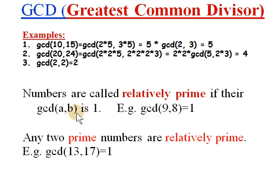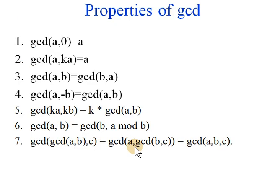Numbers are called relatively prime if their GCD is 1. For example, 9 and 8, the GCD is 1. Any two prime numbers are always relatively prime because they have nothing in common. For example, 13 and 17 are prime and you get 1. What are the properties of GCD? GCD of A and 0 is A. GCD of A and K times A, you can just pull out the A. It's symmetric: GCD of AB same as BA. The sign doesn't matter: A and minus B same as A and B. If both have a common factor K you can pull it out. And this is an interesting identity: GCD of AB is the same as GCD of B and A mod B, the remainder of A divided by B. It's also associative, you can do ABC in any order.